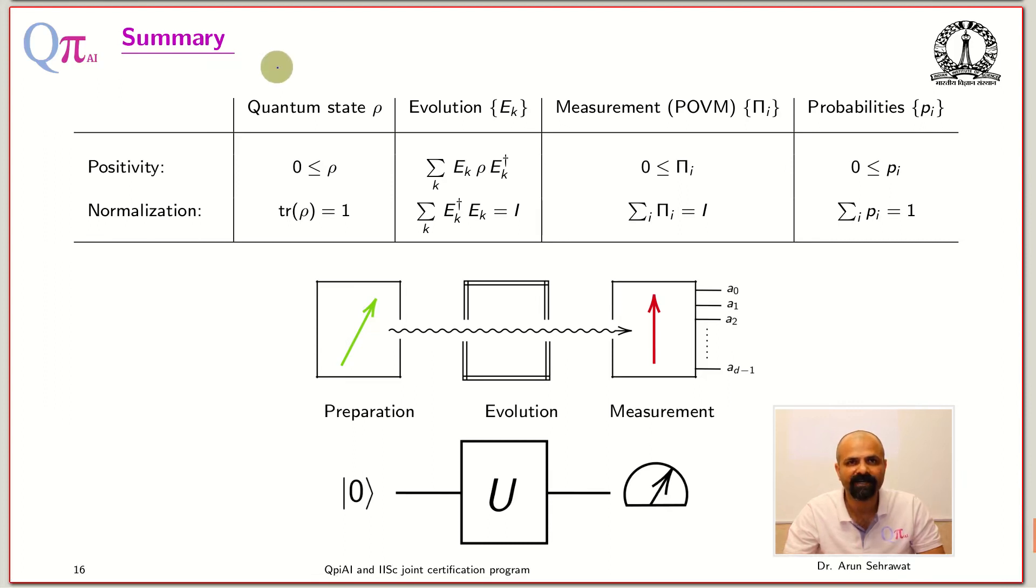Pure state is a special case of this more general state, and pure state you can represent by a state vector. Now we come to the second fundamental box: evolution. Unitary evolution is a special case of more general evolution, which is given by CPTP map.